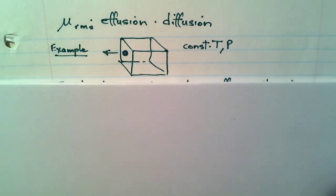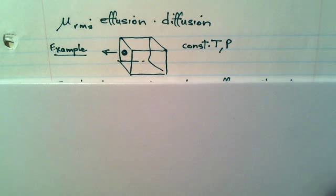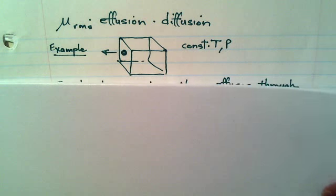Alright, let's look at an example of relative rates of effusion or diffusion or root mean square speed for two gases and let's extend that idea to the time it takes, the relative amount of time it takes for a gas to effuse or diffuse as a process and see where that takes us.